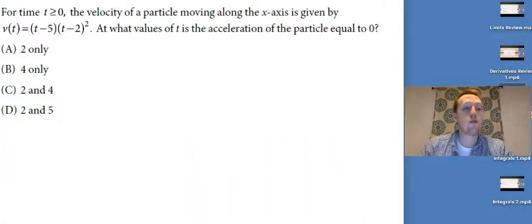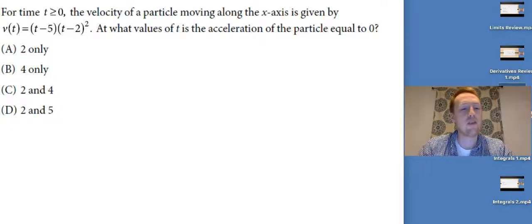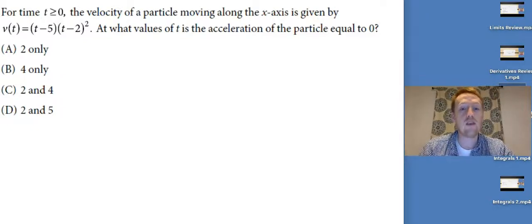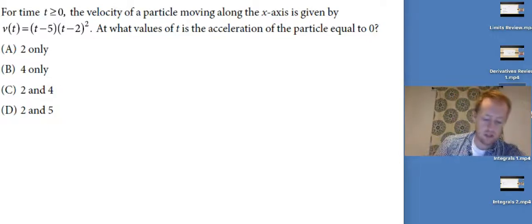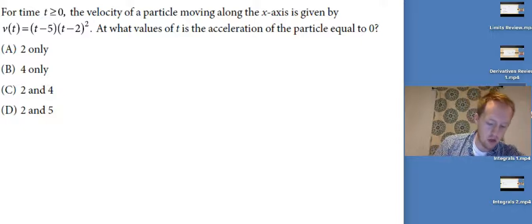For time t greater than zero, the velocity of a particle moving along the x-axis is given by v(t) = (t-5)(t-2)². At what values of t is the acceleration equal to zero? I need to find when the derivative of velocity is zero. I've got a function times a function, so I'll use the product rule: derivative of the first times the second...